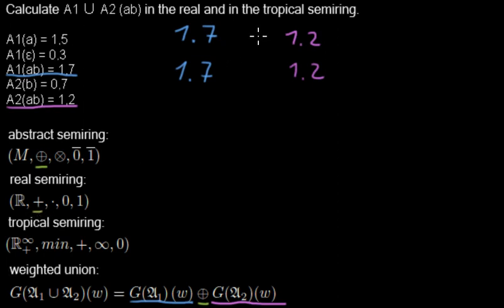That means for the real semi-ring I'm now adding the weights to each other and that means 1.7 plus 1.2 is 2.9. And for the tropical semi-ring the addition is the minimum.